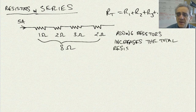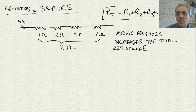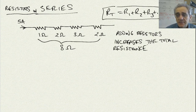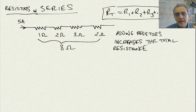Adding resistors increases the total resistance. This might seem pretty obvious — after all, look at this equation. It's pretty straightforward: the more you add, the bigger it gets, because you're adding them all up. But I think it's valuable to articulate this so that it is in your conscious mind.